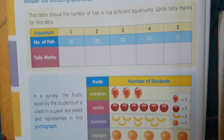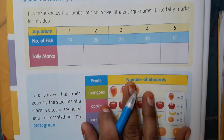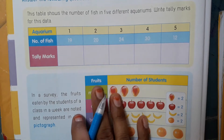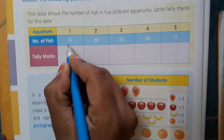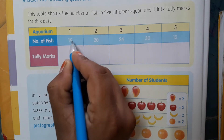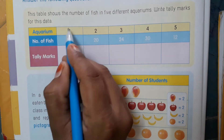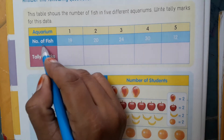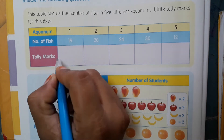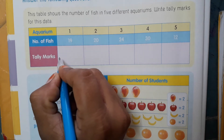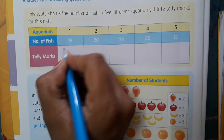Tally marks are also called hash marks. These are used in the unary numerical system. Look here — aquarium 1 has 19 fish. So write the tally marks for 19.